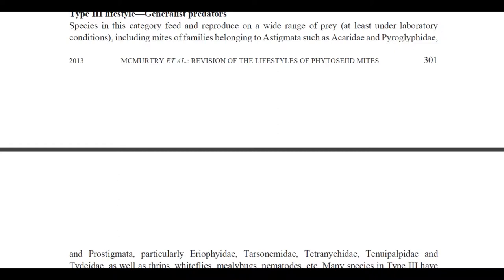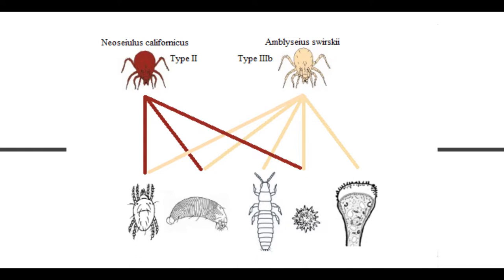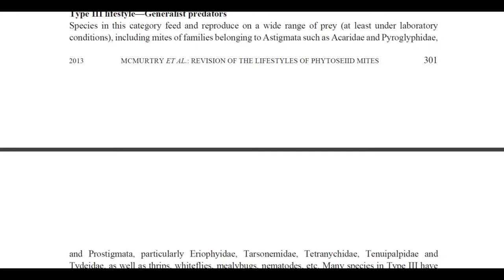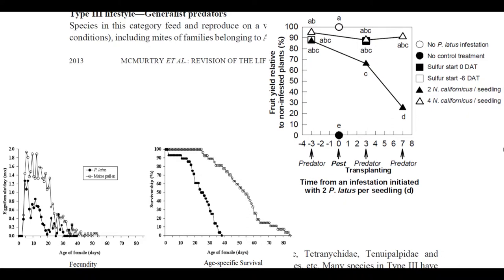Type 3 predators have a very large host range compared to Type 1 and Type 2. Species in this category feed and reproduce on a wide range of prey, at least under laboratory conditions — and this is an important note. Just because a predatory mite can feed on something in the lab does not mean it will be an effective biocontrol agent. Biocontrol agents should have the ability to overmatch the population growth of their pests within reasonable amounts of usage. One benefit of generalist mites is that many are omnivorous, allowing them to be utilized preventatively even when pests are not yet present.